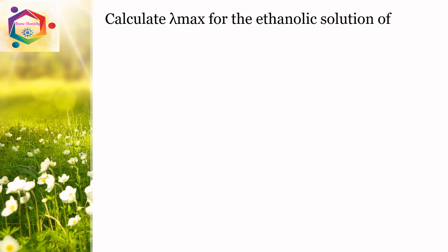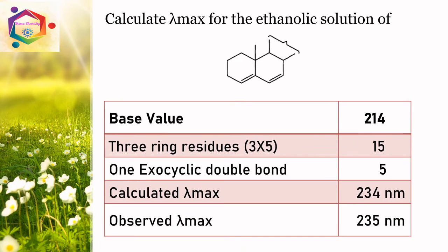Calculate lambda max for the ethanolic solution of this compound. This is a homoannular diene with 3 ring residues and 1 exocyclic double bond. Base value is 214 nm, 3 ring residues: 15, 1 exocyclic double bond adds 5. Calculated lambda max value is 234 nm; observed lambda max value is 235 nm.